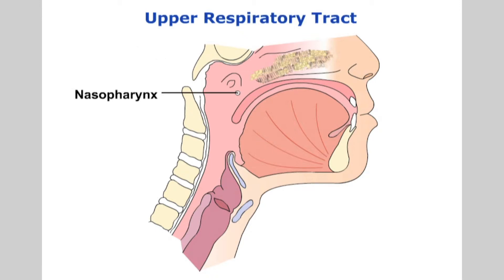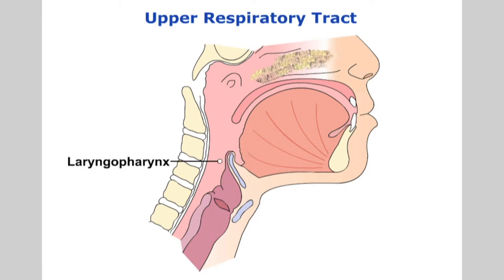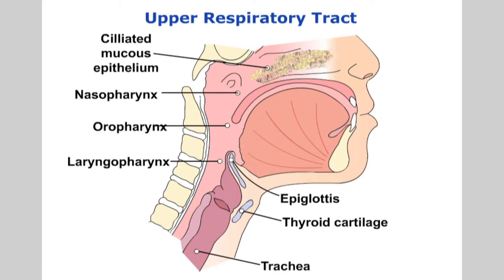The nasopharynx, oropharynx and laryngopharynx form the cavity at the back of the mouth which extends from the back of the nose down to the larynx or voice box. Another function of the respiratory system is to facilitate voice production.